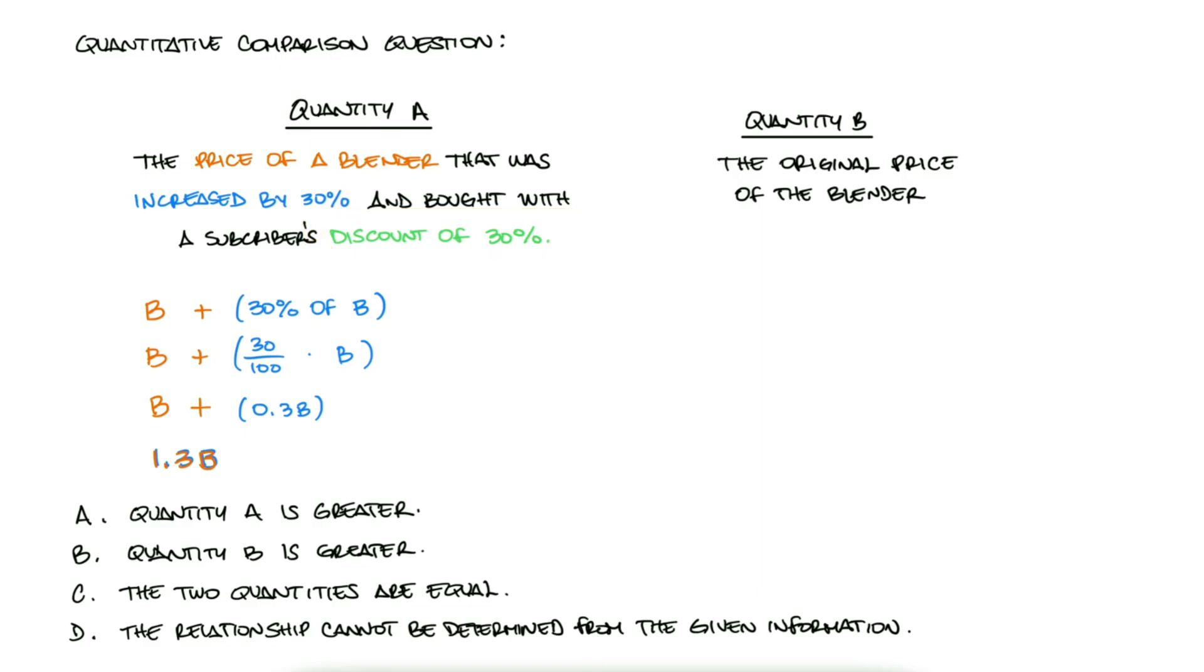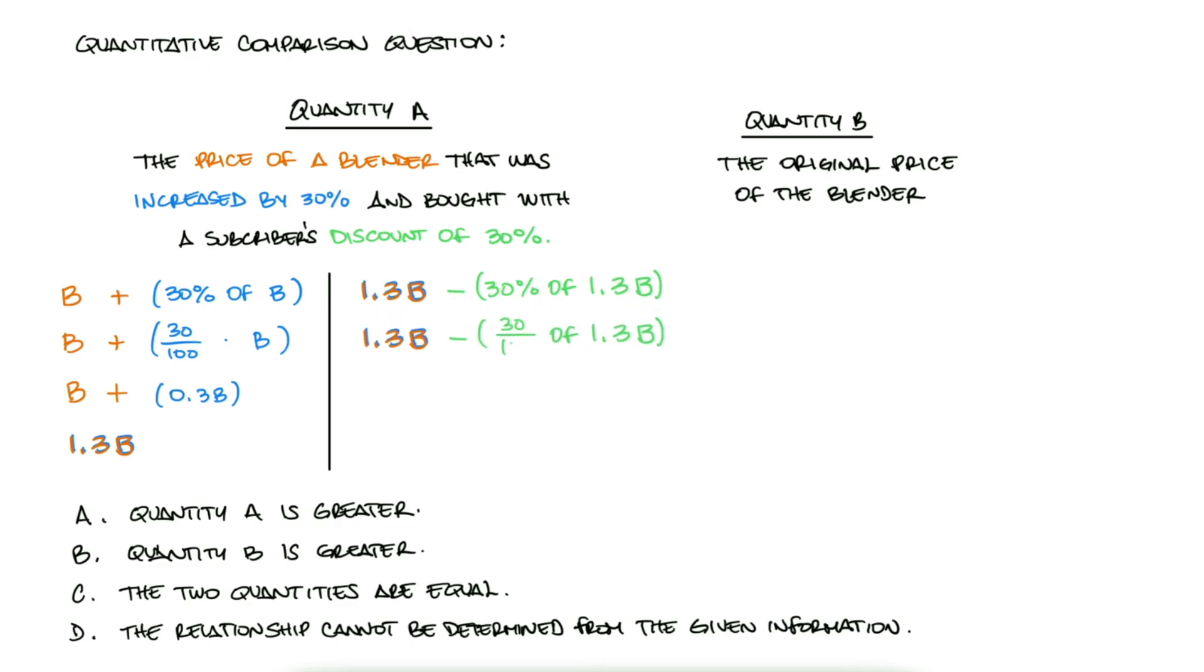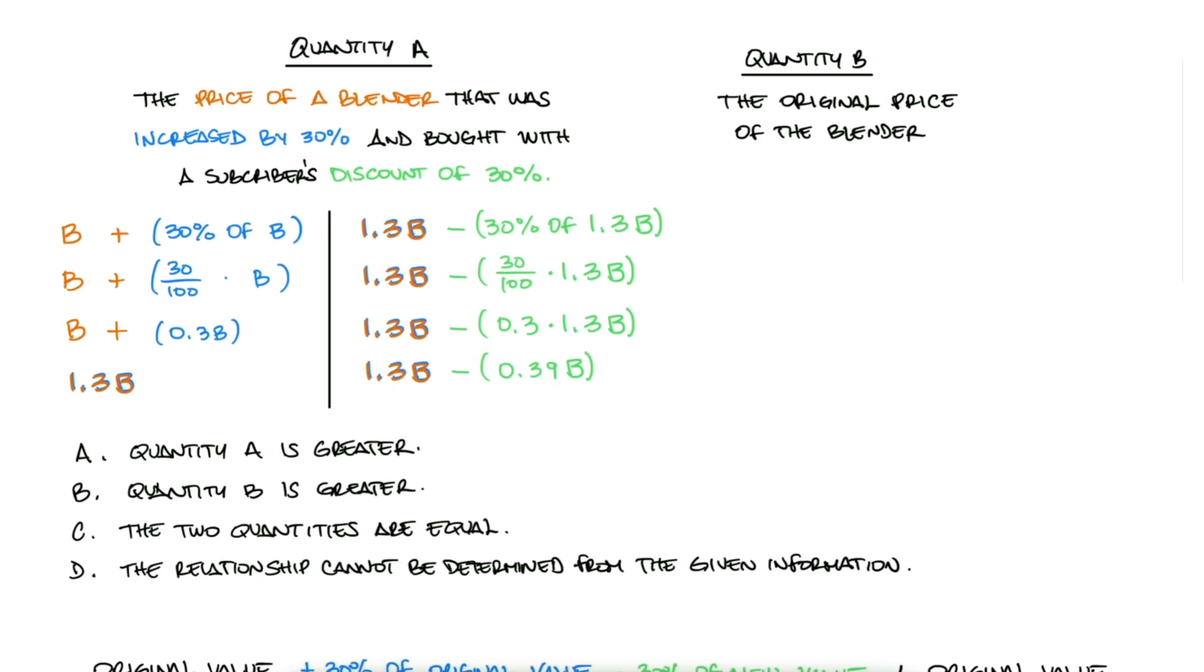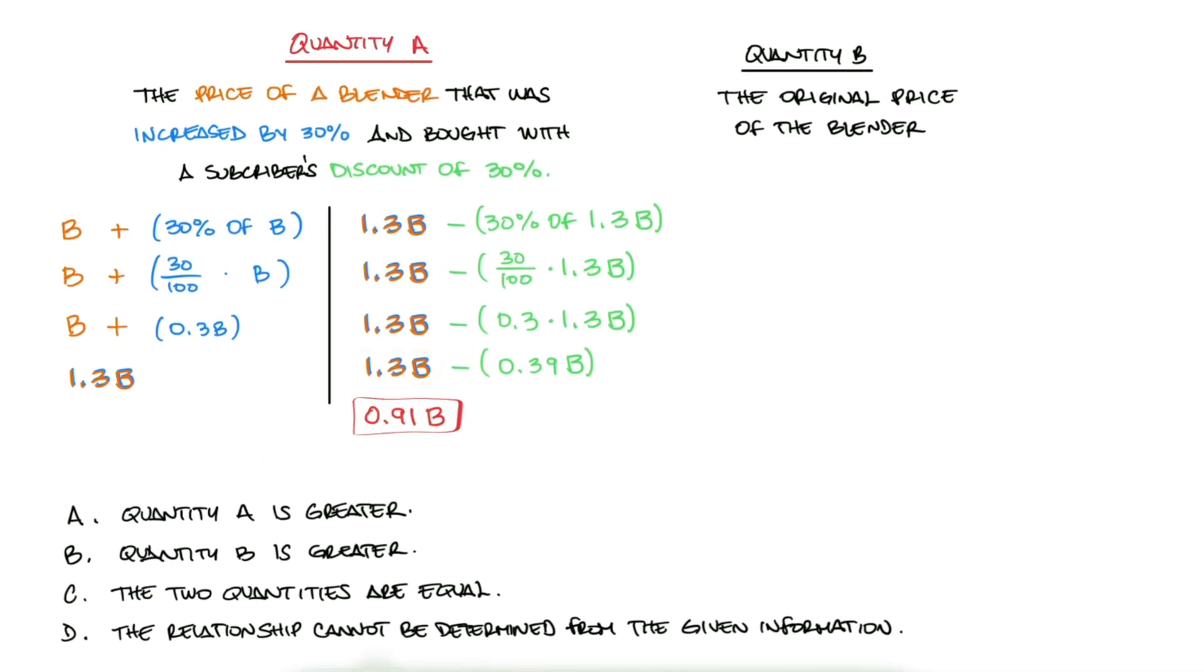If we discount 30% of the new price, that would be the same as taking the new price 1.3B and subtracting 0.3 of 1.3B. In this case, the discount alone is 0.39B. And the new final price would be 0.39B less than the new price, 1.3B, or just 0.91B.